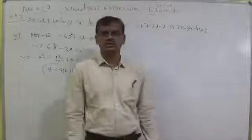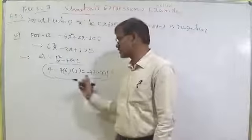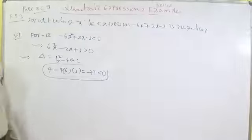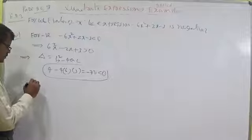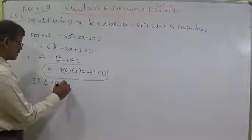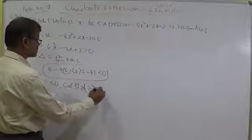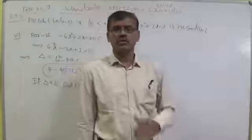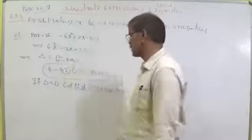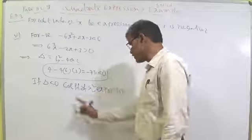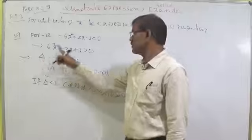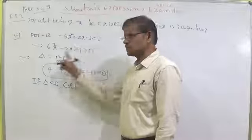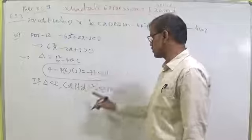We have proved a theorem: if the coefficient of x² and the expression have the same sign when delta is less than 0 for all x. So this function holds true for all real numbers. We can write: if delta less than 0, then the coefficient of x² and the expression have the same sign. Here the coefficient of x² is 6, which is positive, so the expression is also positive — that is greater than 0.